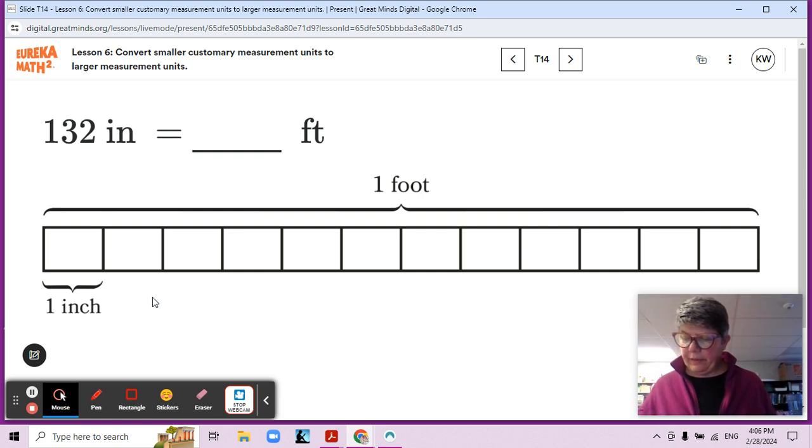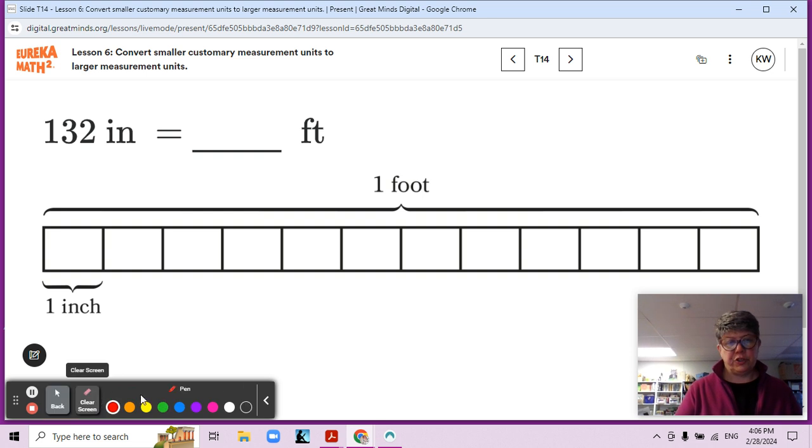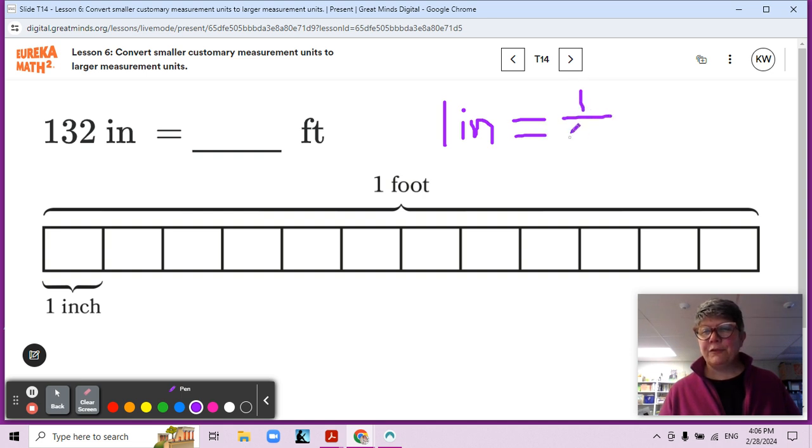Let's continue thinking about that. 12 inches in a foot. You can see that there. What fraction of a foot is equal to one inch? What fraction of a foot is equal to one inch? So one inch, and you can see it right here, one inch, right? One inch is one out of 12 parts of a foot. Is that true? One inch is equal to one twelfth of a foot.